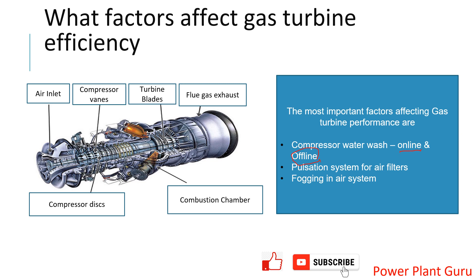Third is the fogging system for inlet air. Ambient air temperature greatly impacts machine performance and output, but you cannot control it directly. At some installations, a fogging system sprays a mist of fine water particles at the gas turbine inlet to reduce the air temperature. If you have that system in your plant, you can use it. So effectively, the three handles to optimize gas turbine efficiency and heat rate are: regular compressor water wash using online and offline methods, effective operation of the pulsation system to keep inlet air filters clean, and use of the fogging system to reduce inlet air temperature.